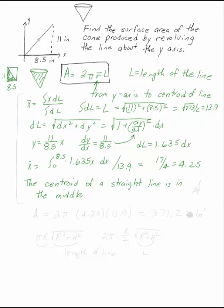And in fact, you could say that the centroid is located exactly in the middle. It would have to be 11 over 2 up and 8.5 over 2 in. So, in general, all of this you could skip if you happen to know that the centroid of a straight line is in the middle. It is very symmetric.